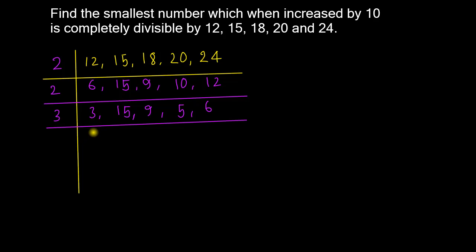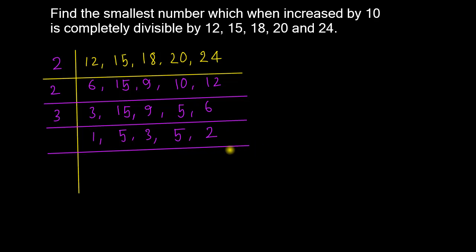15 divided by 3 is 5. 9 divided by 3 is 3. 5 divided by 5 gives 1. Correct. 3 divided by 3 gives 1. Two, two — together that's correct. So we now have 1, 1, 3, 1, 2 for the regular prime factorization listing.